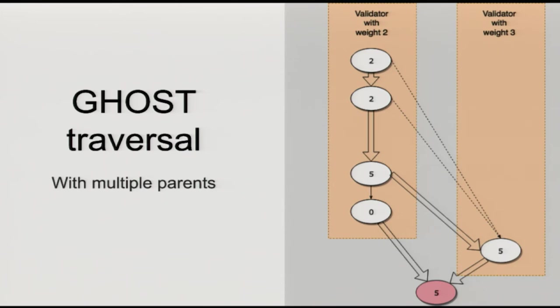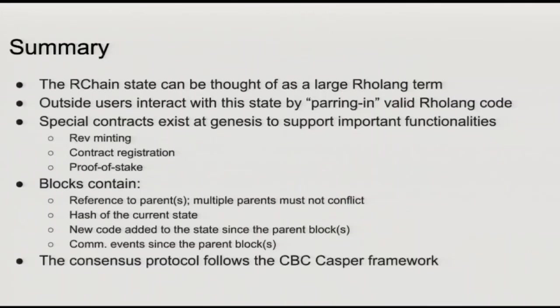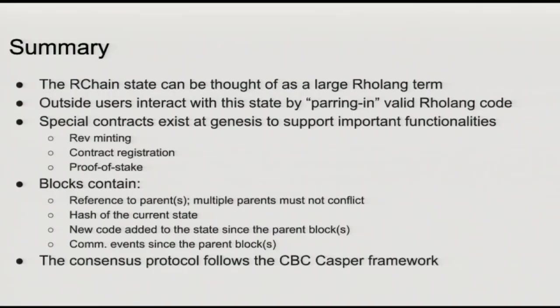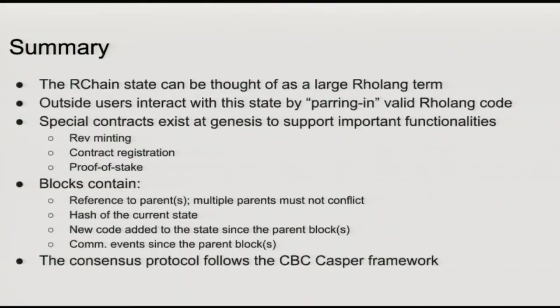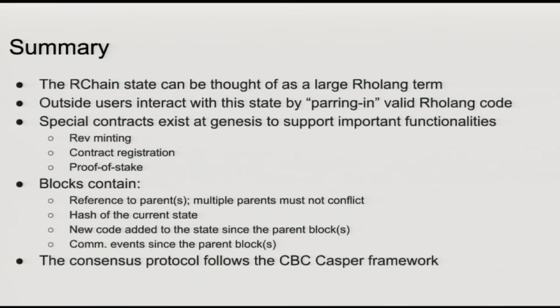The R-chain state can be thought of as a large rolling term, broken up among namespaces. Outside users interact with it by par-ing in valid rho-calculus code: you go to a namespace, get the term, say 'par' and then something else, and it reduces. Special contracts exist at genesis to support important functionality — the REV contract, proof-of-stake, and the registry. Blocks contain references to parents, the parents can't conflict with each other, and there's a hash of the current state. The consensus protocol follows the CBC Casper framework.